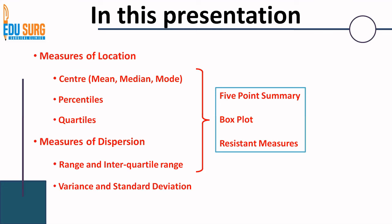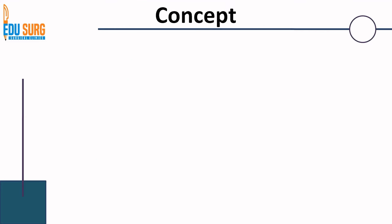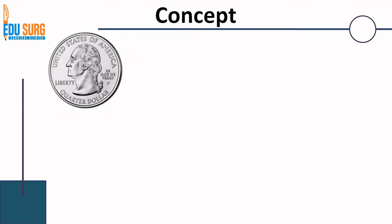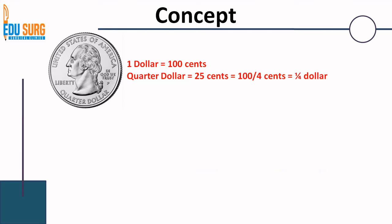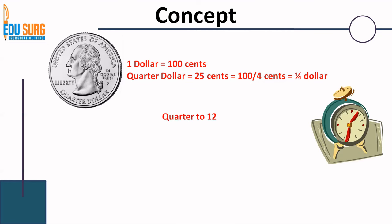Some of the measures here are resistant measures — that is, measures that are not affected by extreme values — and that we will also see in this presentation. When we talk of quartiles and percentiles, conceptually what is a quarter? When a dollar is 100 cents, a quarter of a dollar is 25 cents, or 100 divided by 4 cents, that is one-fourth. So a quarter conceptually is 25%. Similarly, if we see a clock and say it is quarter to 12, we are 15 minutes short of 12 — 15 minutes is the quarter, or the total divided by 4.